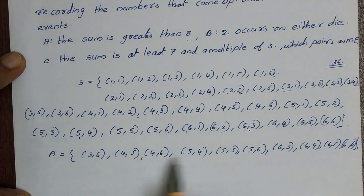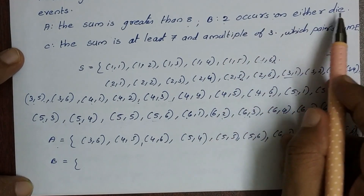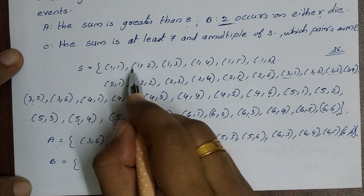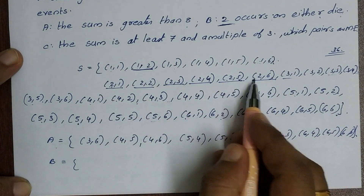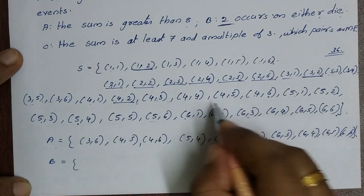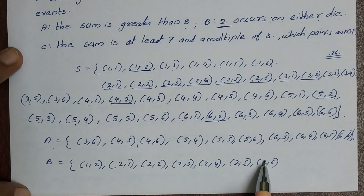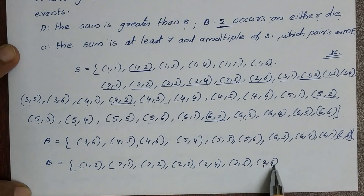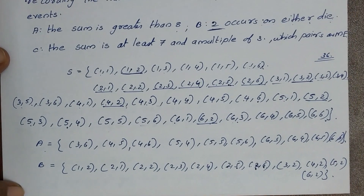Event B is that 2 occurs on either die. So we include all pairs where at least one die shows 2: (1,2), (2,1), (2,2), (2,3), (2,4), (2,5), (2,6), (3,2), (4,2), (5,2), (6,2).